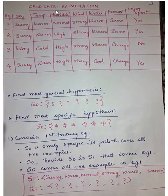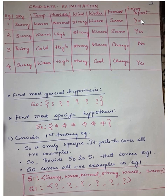Let's consider the table. This is the table we are taking, where we have four examples. There are six attributes here: sky, temperature, humidity, wind, water, and focus, which is going to say whether the person is going to enjoy the sport or not. Depending upon the value, we say yes if the person is going to enjoy the sport, and no if not.